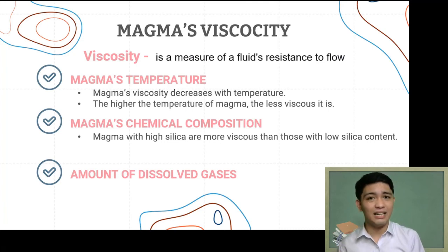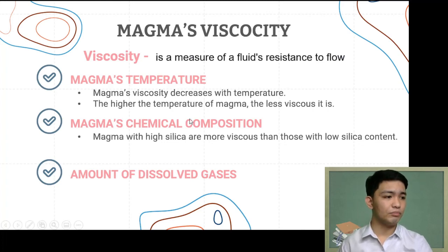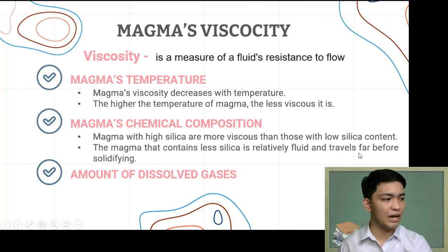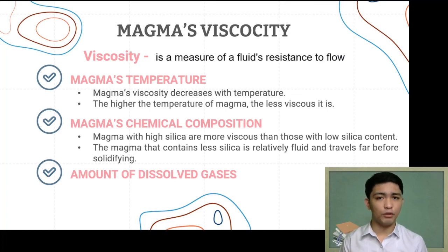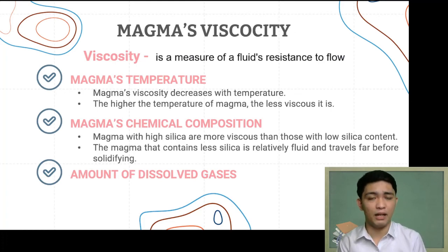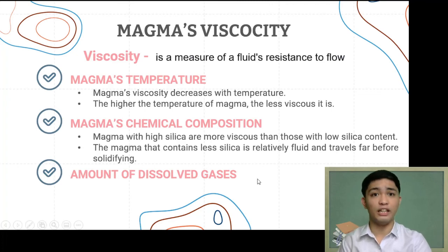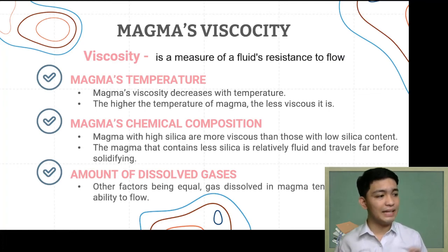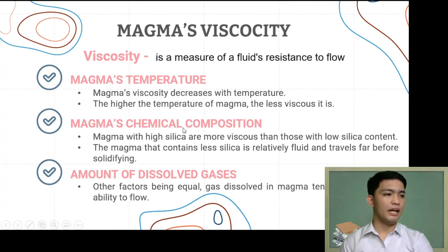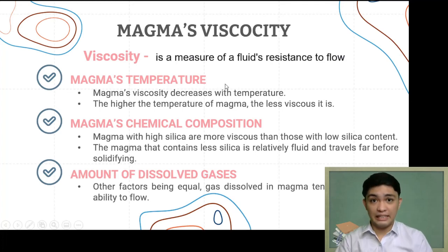The second factor is chemical composition, specifically the silica content. Magma with high silica content is more viscous than magma with low silica — more silica means thicker, slower-moving magma that solidifies more easily, blocking gases and causing explosive eruptions; less silica means runnier magma that travels far before solidifying, resulting in non-explosive eruption. The third factor is the amount of dissolved gases: more dissolved gases in magma tend to increase its ability to flow, resulting in less explosive eruption.